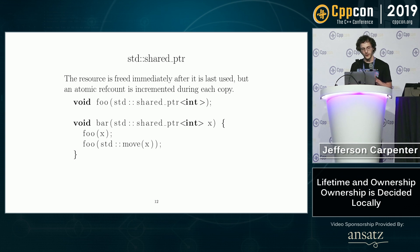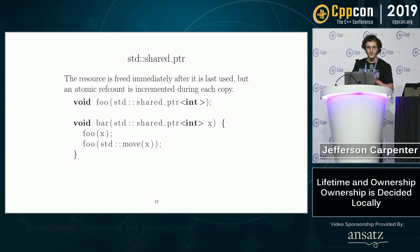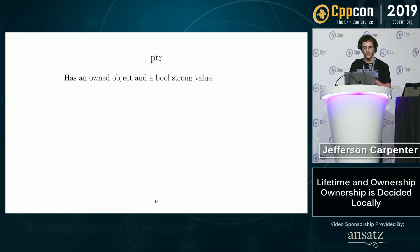Shared pointer is similar. With shared pointer, you only have to define foo once, and you can delete the data as soon as it's been used last, but you're incrementing an atomic reference count. That's a little bit slower. So unique pointer is a little faster, but shared pointer is a little more memory efficient, or resource efficient.